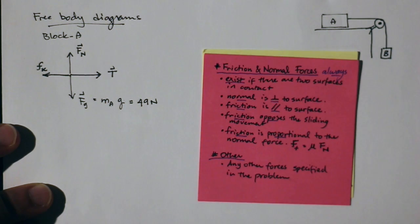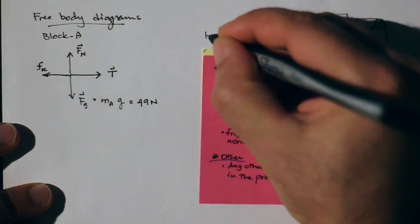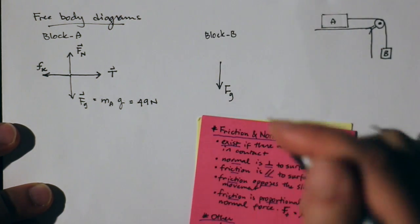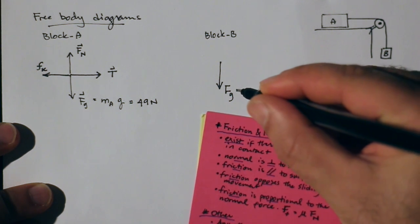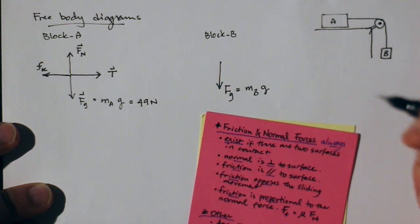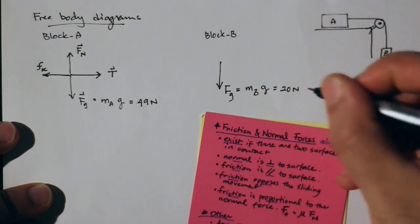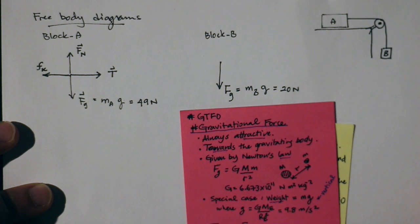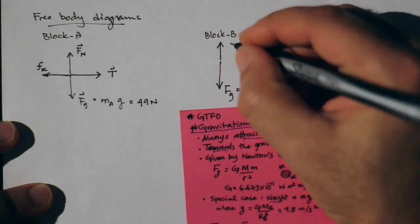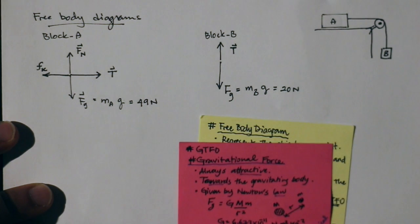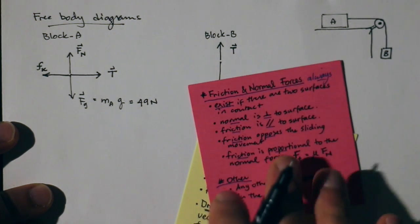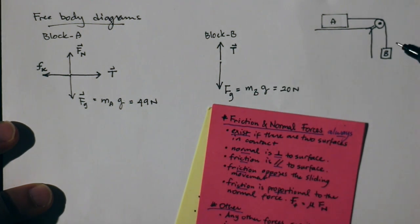Those are all the forces acting on A. As for block B, there is always gravity pulling it downward — the force of gravity equals mass of B times g, which is given as 20 newtons. There is also a tension force due to the rope: the box pulls the rope down, but the rope pulls the box up. There is no surface contact for block B, so there are no friction or normal forces, and no other forces acting on it.